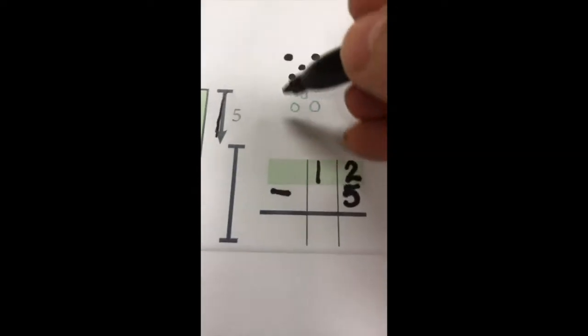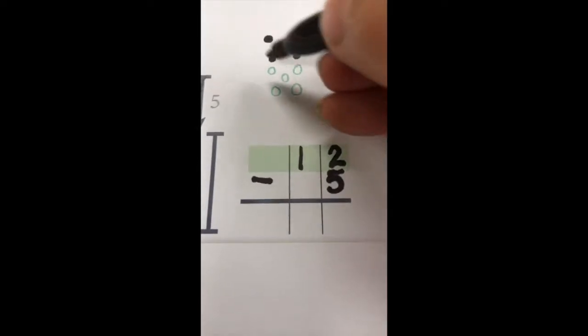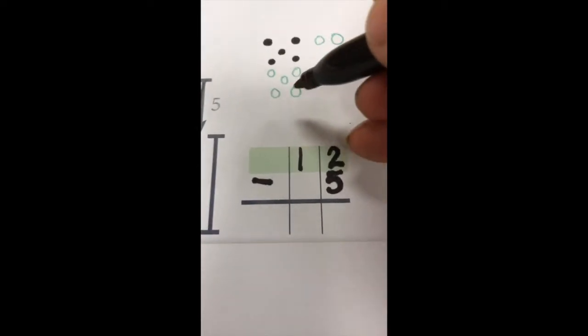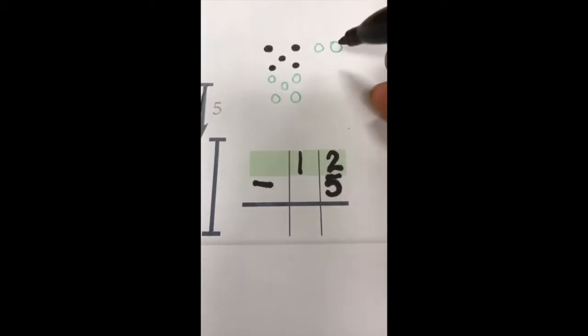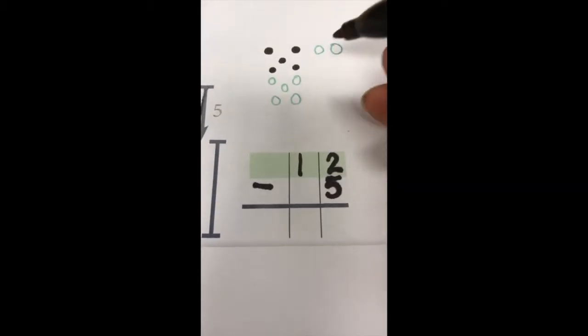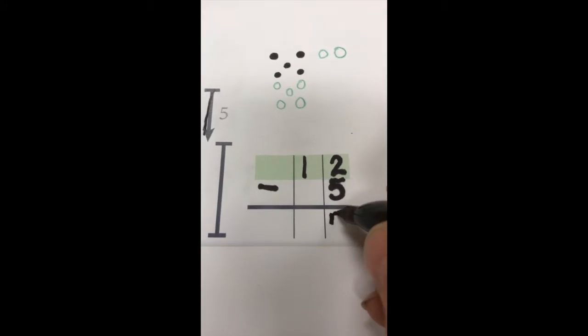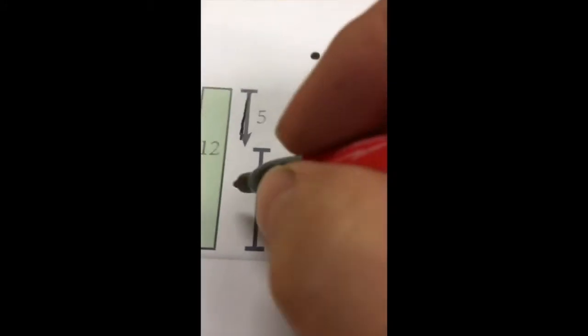12 minus 5. Here's 12. If I take this 5 away from the 10, I'll have 5 green and 2 more. 5 and 2, 7. That's what's left.